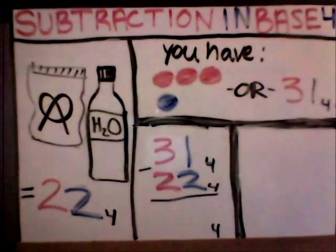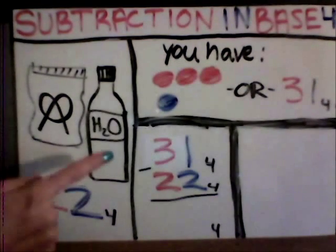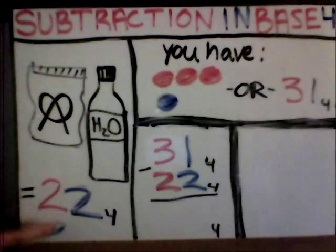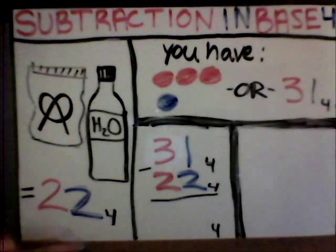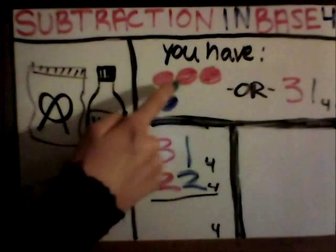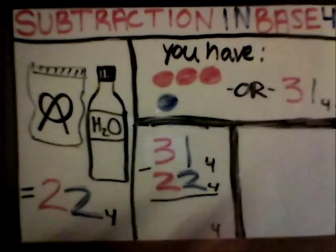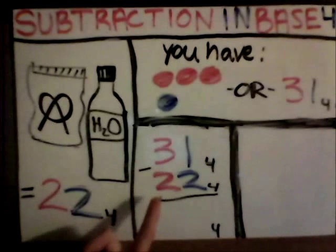Suppose you walk into a store and the prices are in base four. You buy a bag of pretzels and a bottle of water. You go up to the cashier and he says that your price is twenty-two base four. So what this means is that you need to pay two red coins and two blue coins. You have three red coins and one blue coin, or thirty-one base four. So thirty-one base four minus twenty-two base four.